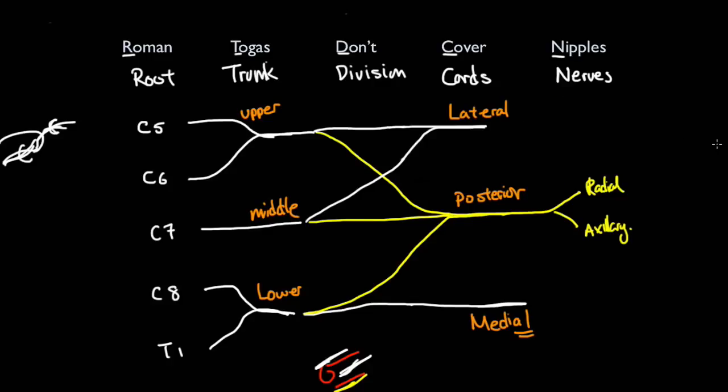The lateral moves on by itself, it will split off. And when it moves on, after splitting, this becomes the musculocutaneous nerve. And the medial also splits off, fuses with the lateral cord, and this forms the median nerve.